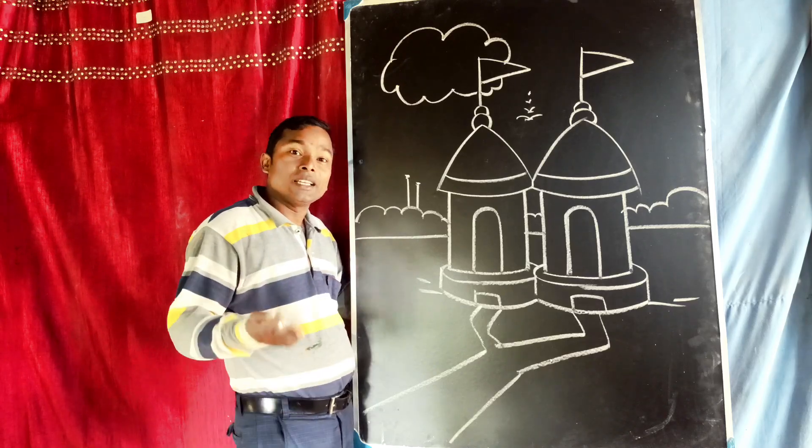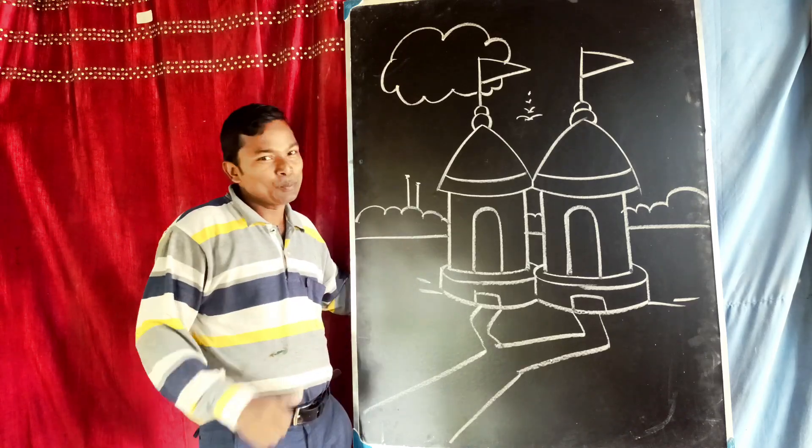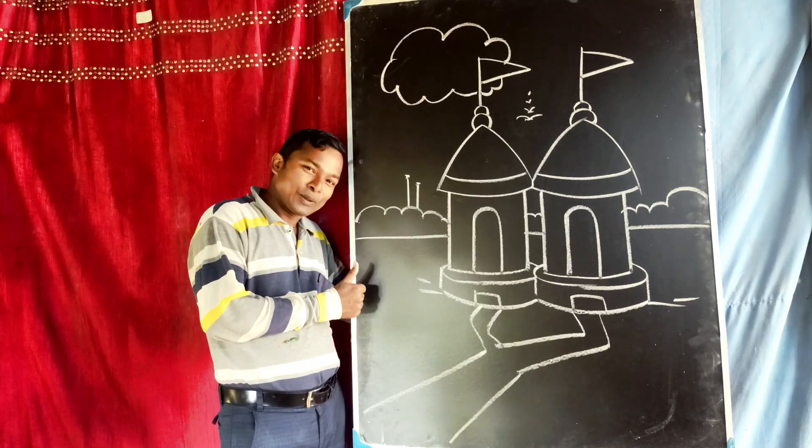পরিবেশ না জানা হয় জটিল কে বোধ, আগে ছে ভেশ। এখানে কেকো লব ছেশ।